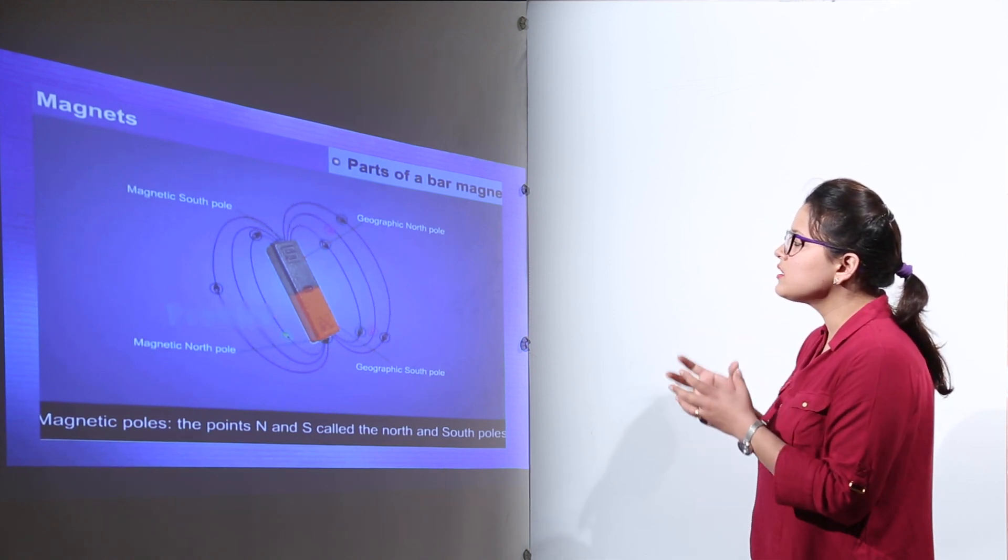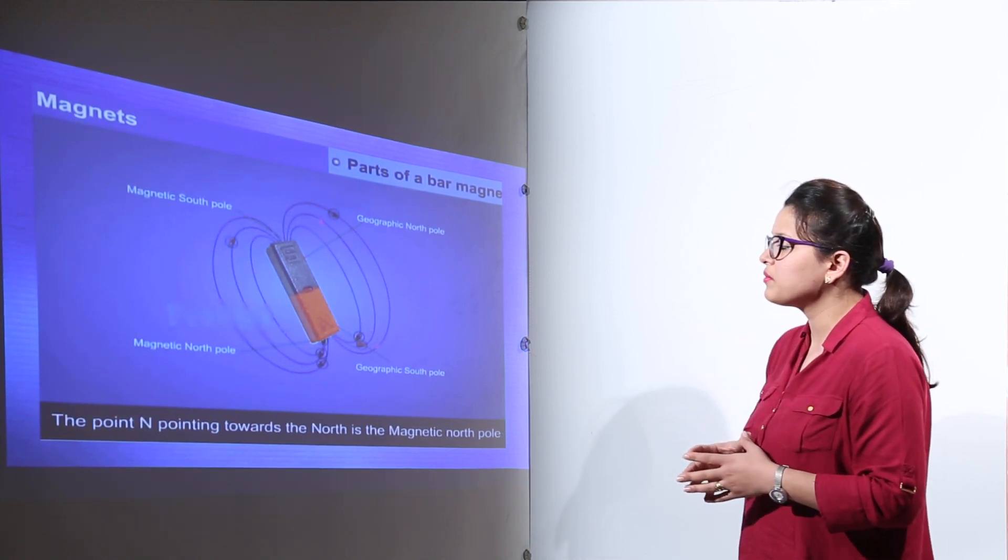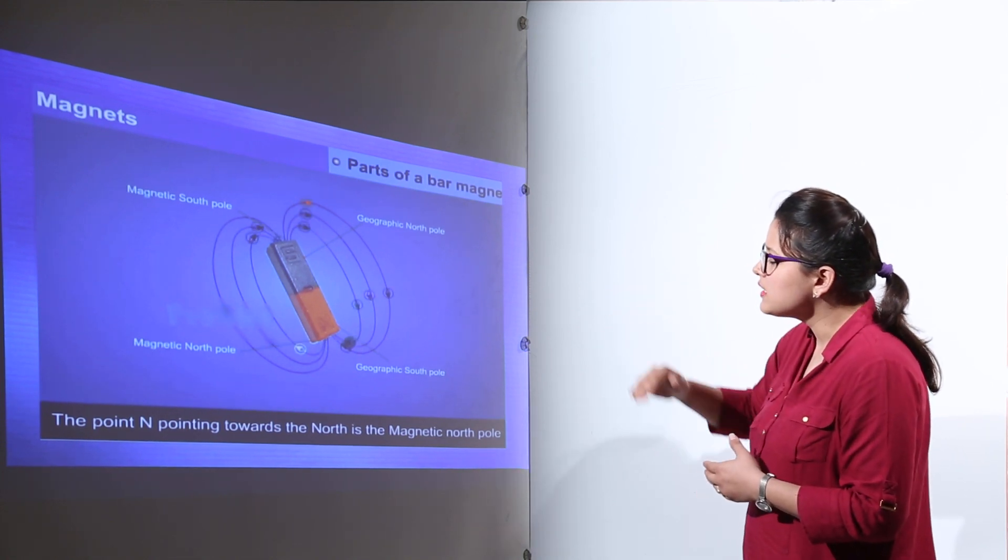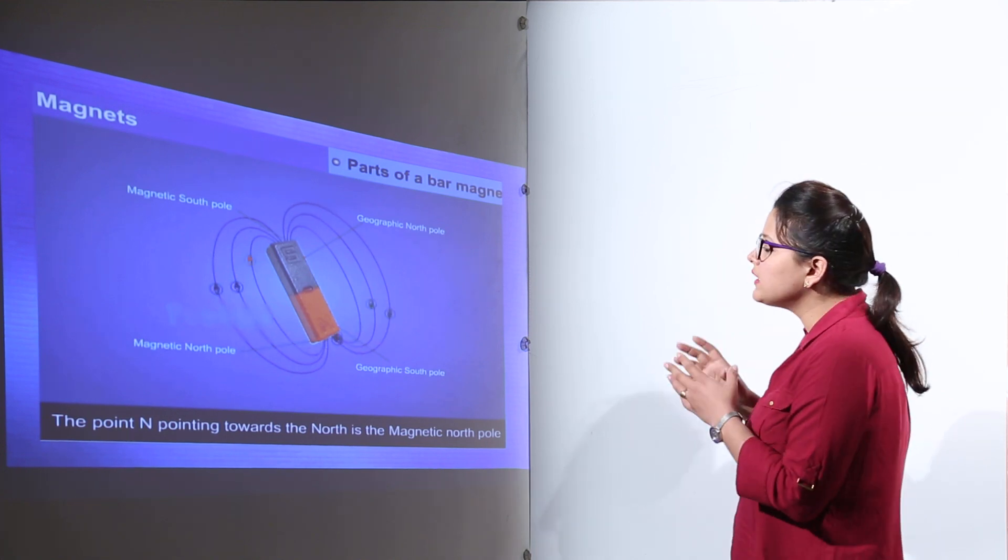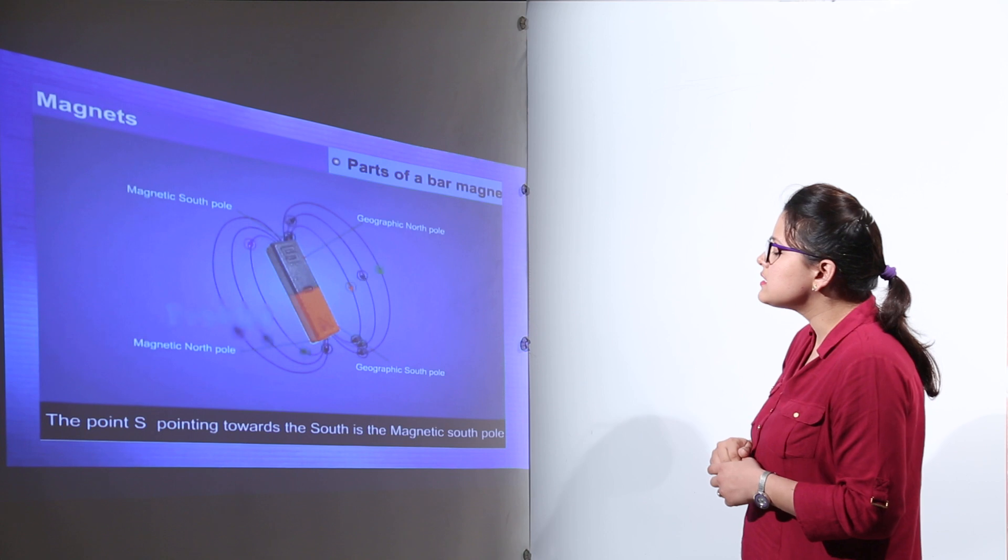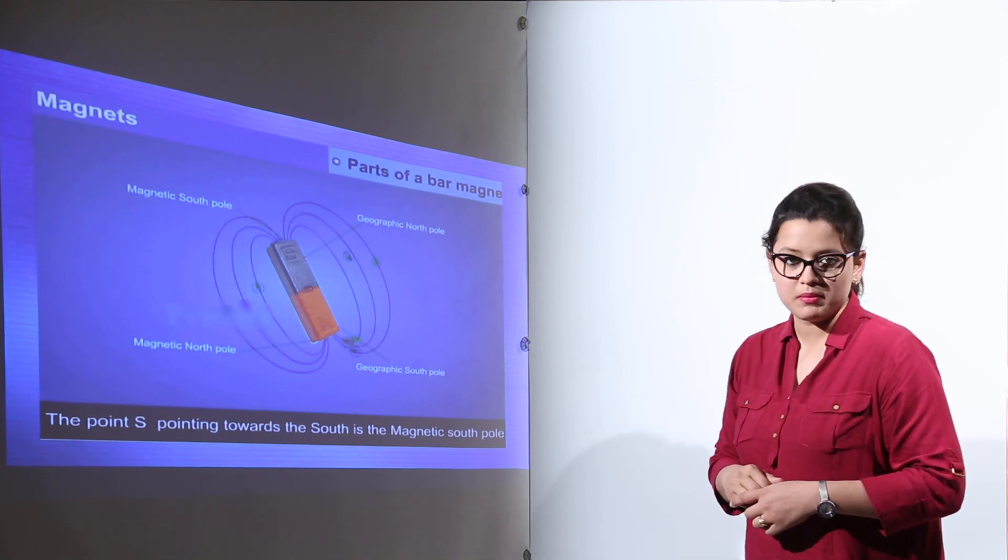So next is what is the north pole and what is the south pole of a magnet. The point N, which is pointing towards the north, is the magnetic north pole, and the point S that is, you can see, pointing towards the south is the magnetic south pole of the magnet.